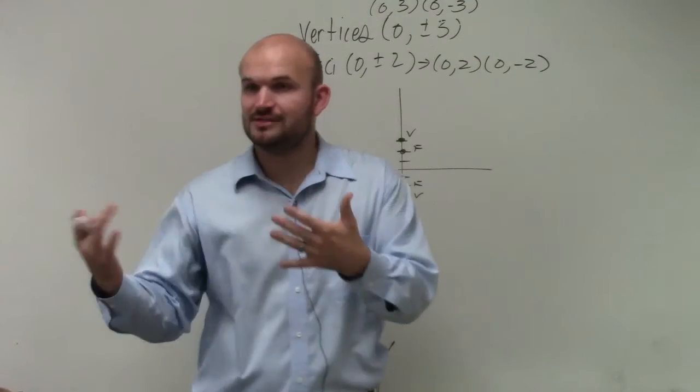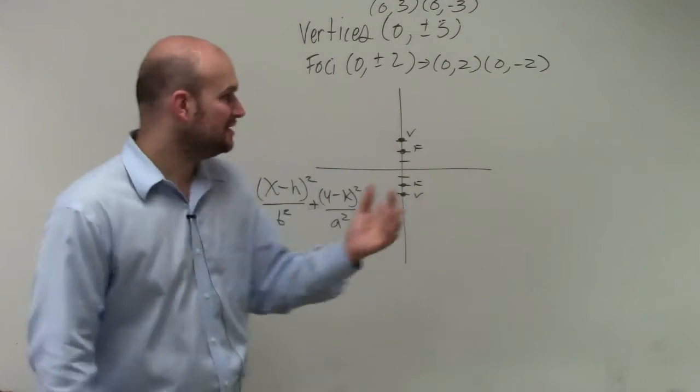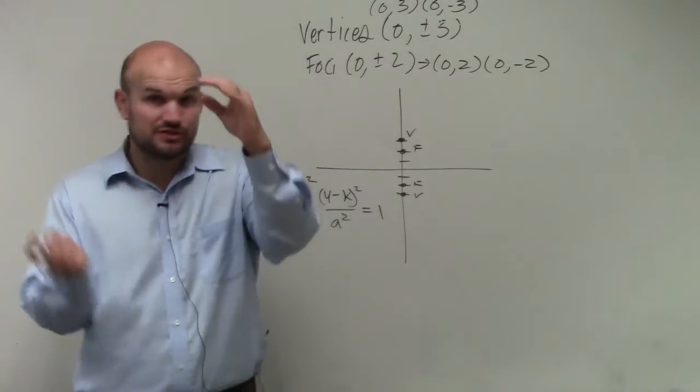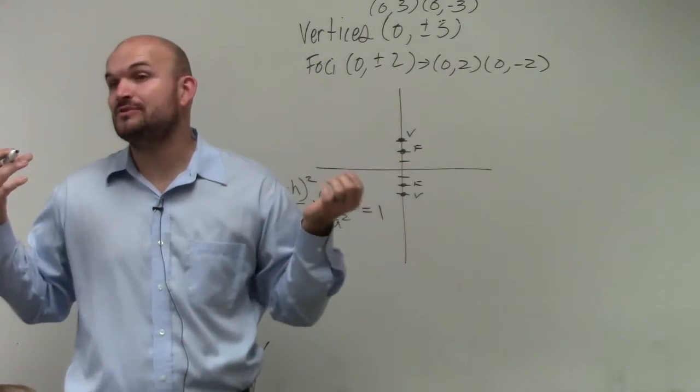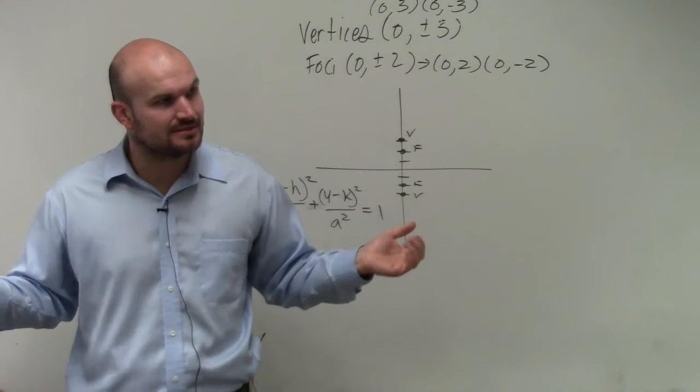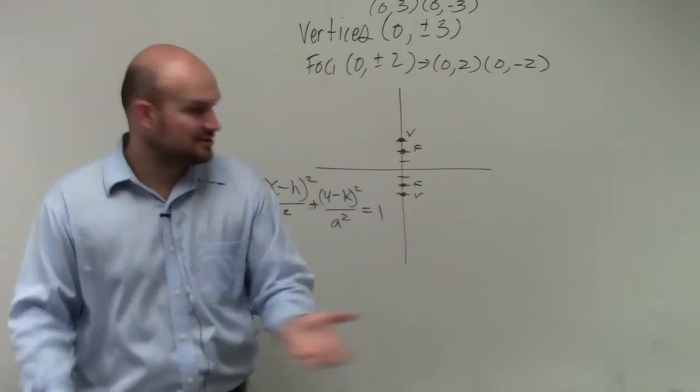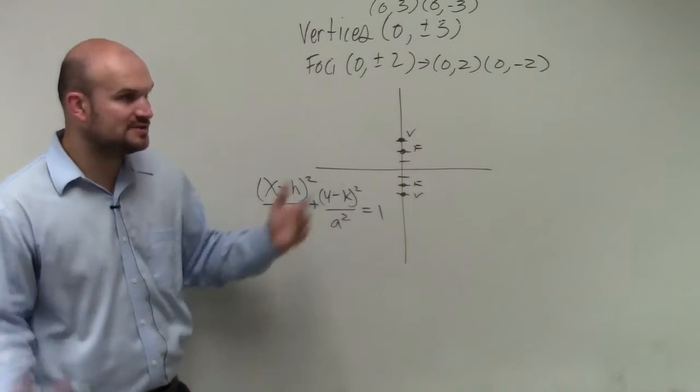Because what's important when you guys look at that graph, the center is halfway between the two vertices. It's halfway between the two foci. And it's halfway between the two co-vertices. Right? It's midpoint. So we have two vertices. We have two foci. Can we find the center?